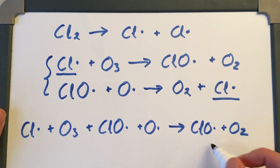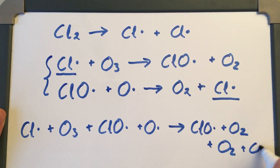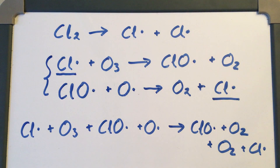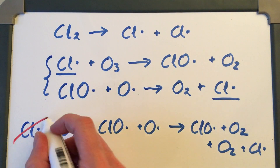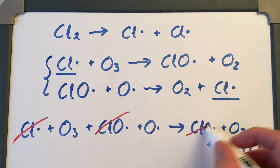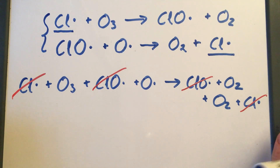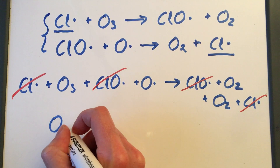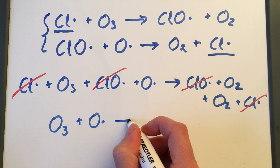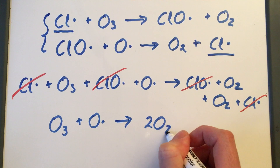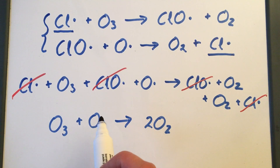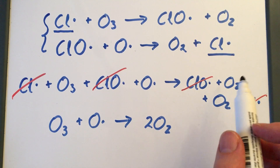On the products side we also have another oxygen molecule and a chlorine radical. We then look at what can be cancelled — what appears on both sides, in both reactants and products. We have two chlorine radicals and two chlorate radicals that cancel. Writing out the resulting equation, we get ozone reacting with an oxygen radical to produce two oxygen molecules.